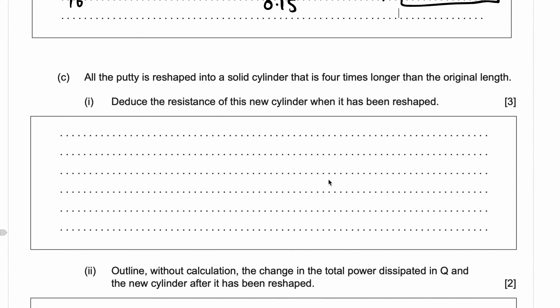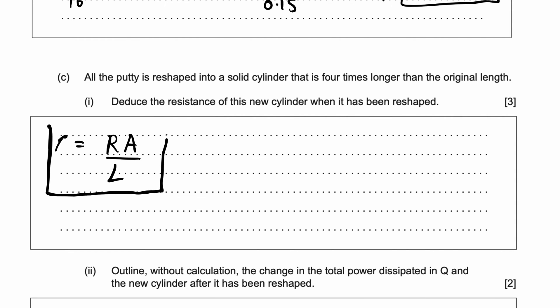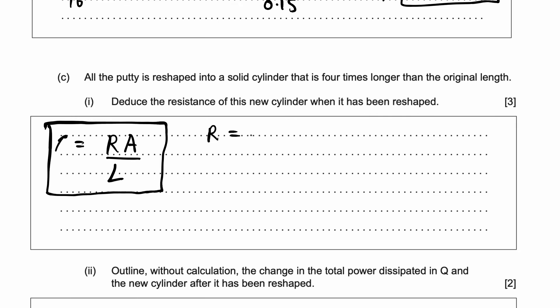The putty is reshaped into a solid cylinder that is 4 times longer than the original length — find the resistance of this new cylinder. In your data booklets you have the equation: resistivity ρ = R·A / L, which rearranges to R = ρL / A. We can use this formula from the formula booklet to solve this problem using the dividing technique.